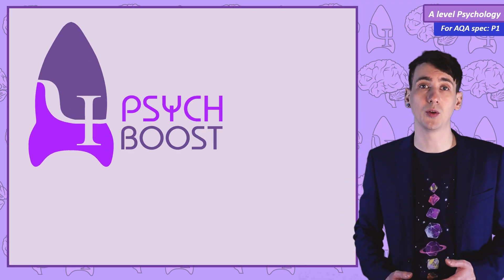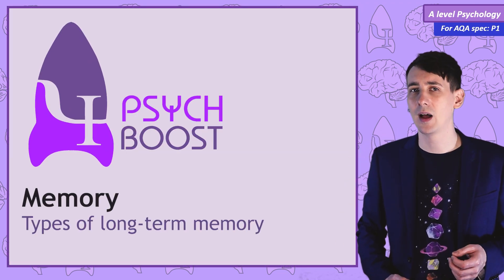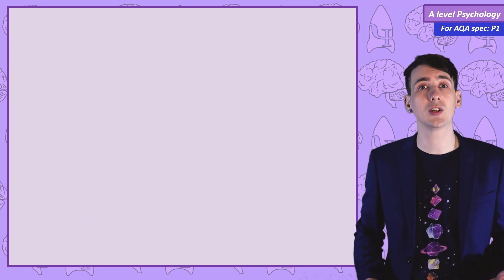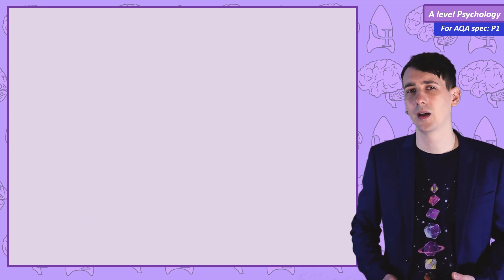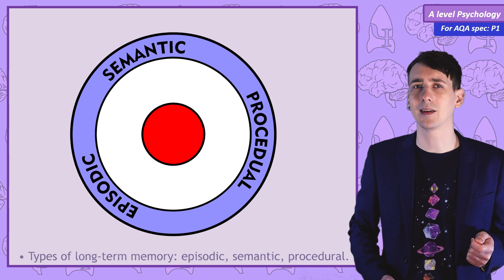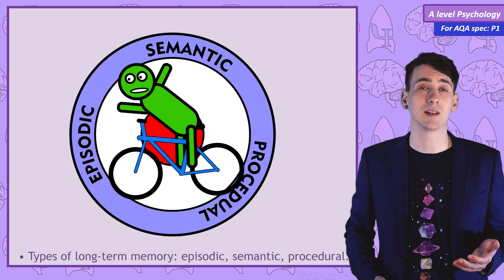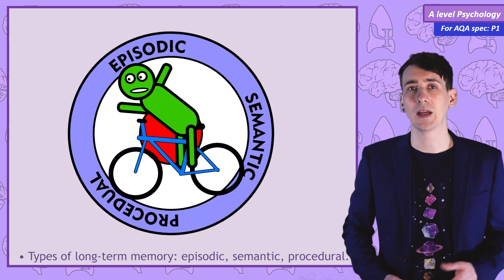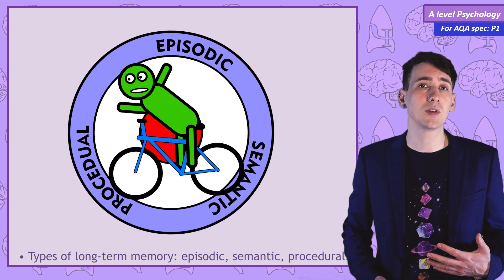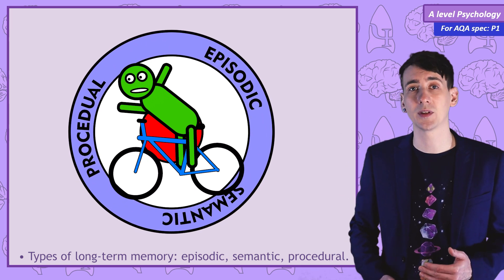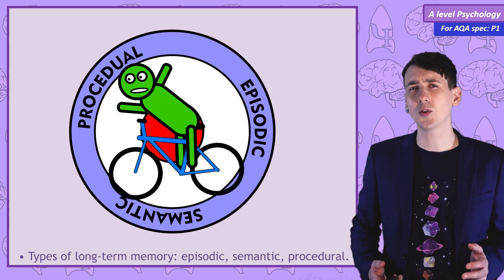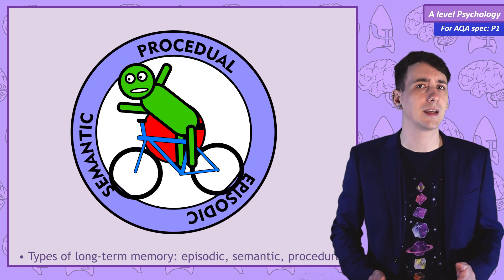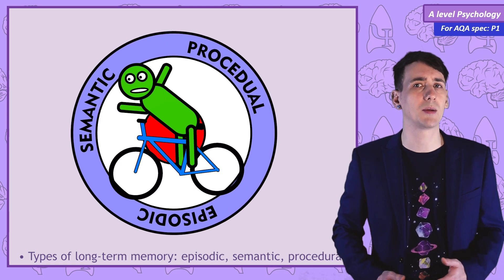In the previous video I introduced a multi-store model of memory, and in that video I said the long-term memory store is coded semantically — we store information according to what it means. But when I think of a bike, I do know semantically what it means, the definition of the word, but I also remember how to ride a bike. It's a muscle memory and it seems like a different type of long-term memory from semantic memory. I can also think back and remember what happened the last time I rode a bike, and again that seems to be a very different type of long-term memory.